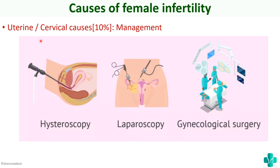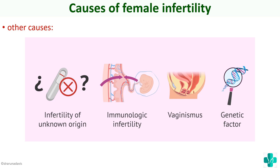Management of uterine and cervical causes depends on the underlying cause. Hysteroscopy can identify abnormalities of the uterine wall such as synechiae or adhesions, which can then be removed. Laparoscopy is used especially in cases of endometriosis. Other gynecological surgeries are performed according to the problem: polypectomy for polyps, myomectomy for fibroids — treating whatever is causing the infertility.